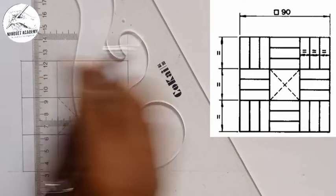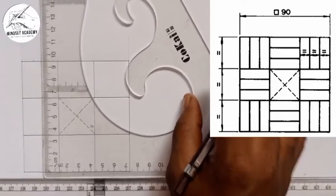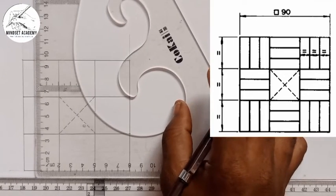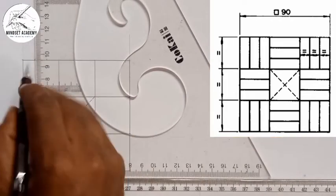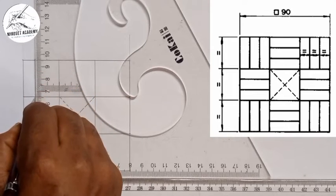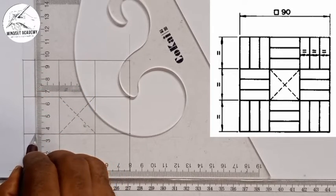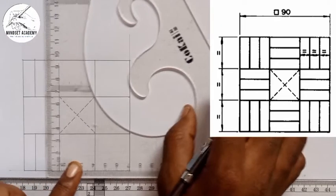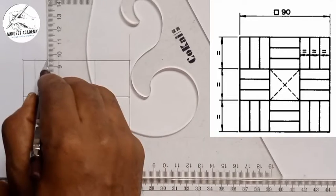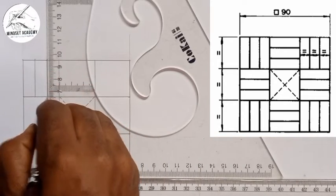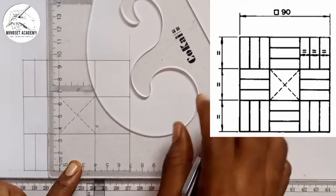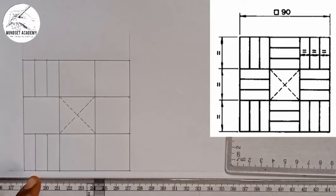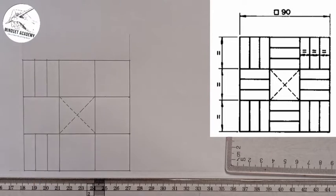With the help of my T-square and set square I'll draw a straight line from here, touch this point, leave the space, come here and draw. I'll come to the next one and do the same thing — draw a line from here, touch here, leave the space, and come here. The same pattern is repeated on the other side because it's a mirror image.